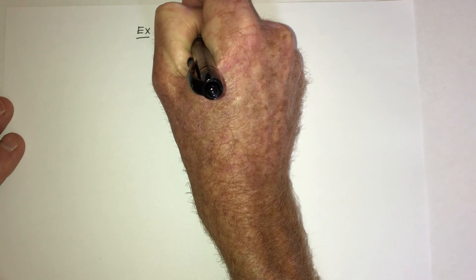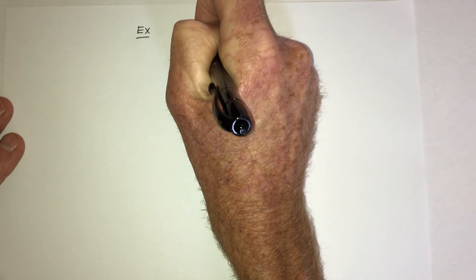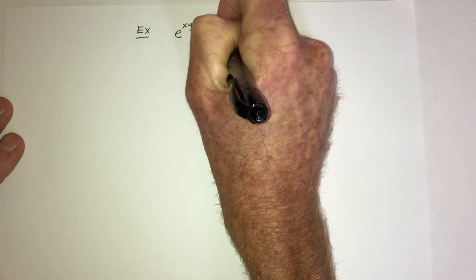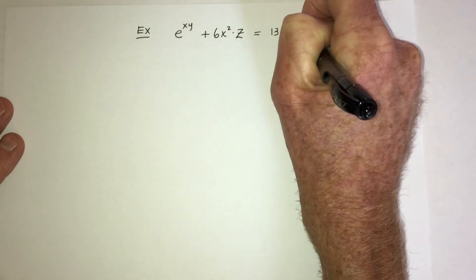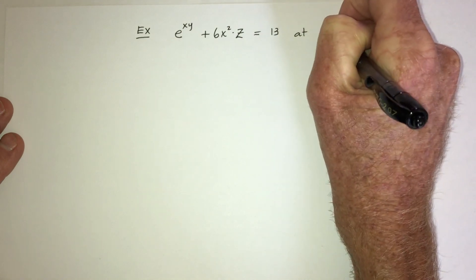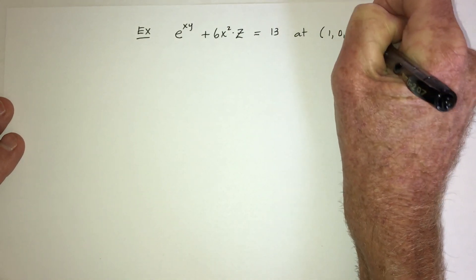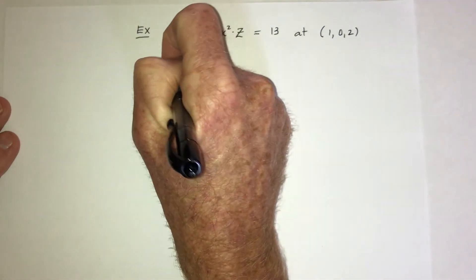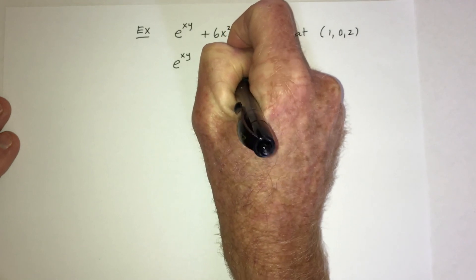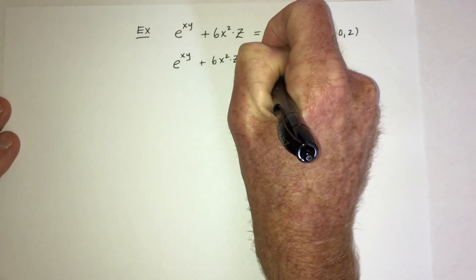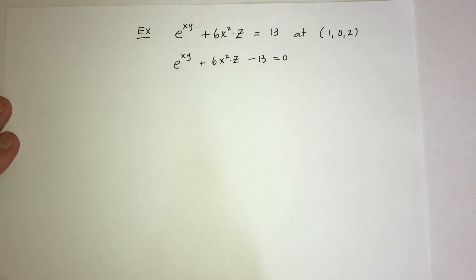For example number one, the function is e^(xy) plus 6x²z equals 13, at the point (1, 0, 2). The first thing to do is set it equal to 0 by subtracting 13 from both sides.